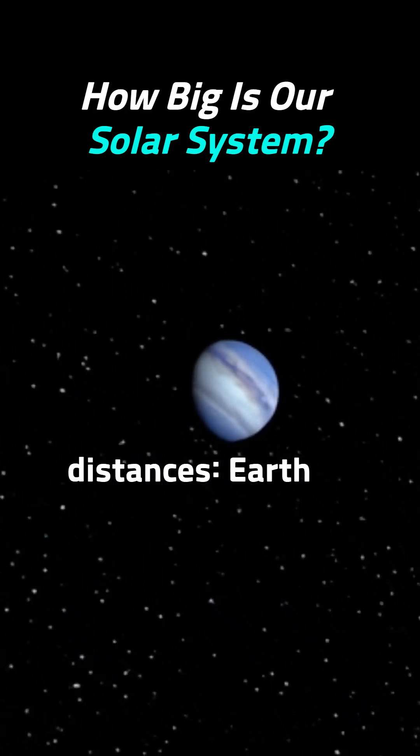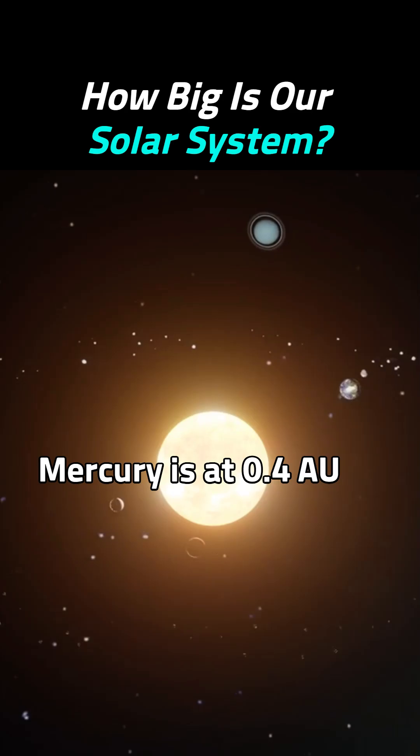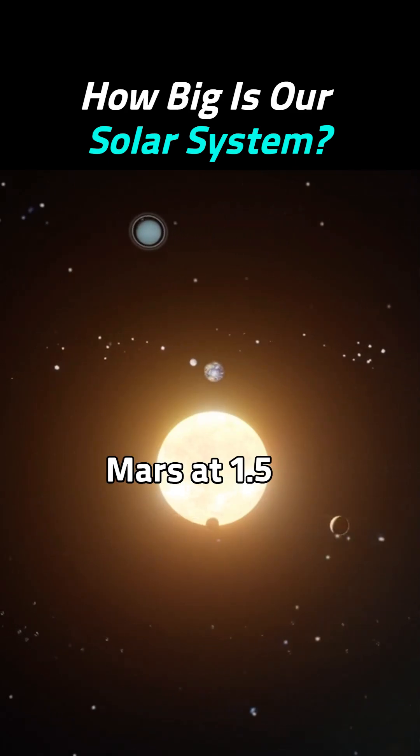The planets orbit the Sun at increasing distances. Earth sits at 1 AU. Mercury is at 0.4 AU, Venus at 0.7, Mars at 1.5.